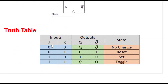This is the truth table. There are two inputs, two outputs, and we name the states. When both inputs are zero-zero, the output will not change - it remains in the previous state. This is because a flip-flop is a sequential circuit, and in a sequential circuit the output depends on the present input as well as previous outputs. For input zero-one, output becomes zero-one.